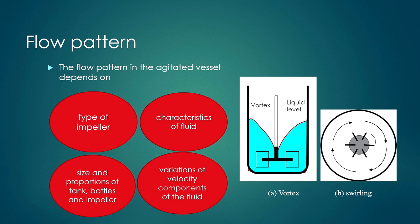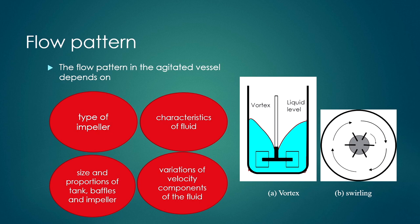The flow pattern in agitated vessels depends on the type of impeller used, the characteristics of the fluid — whether highly viscous or less viscous, or a slurry — and the size and proportions of the tank, baffles, and impellers. The flow pattern also depends on variations of velocity components in the radial or axial directions. Basically two flow patterns are important: vortex formation and swirling formation.